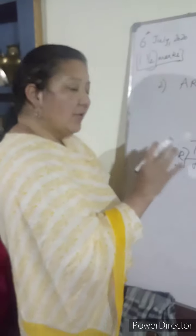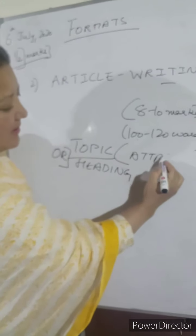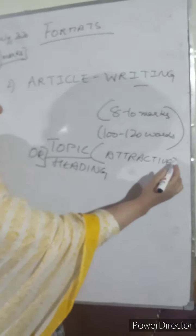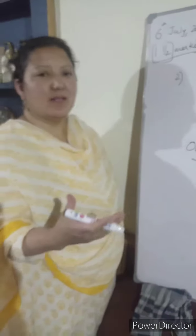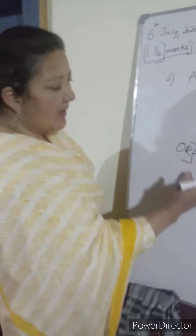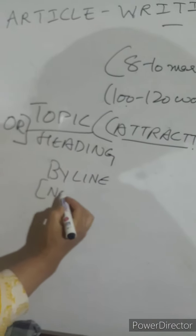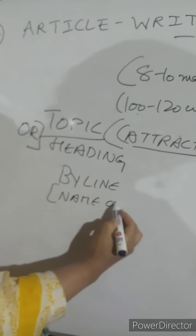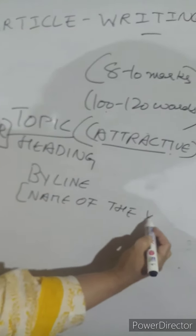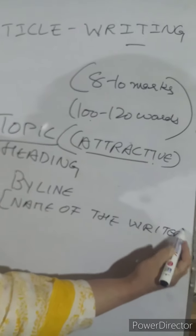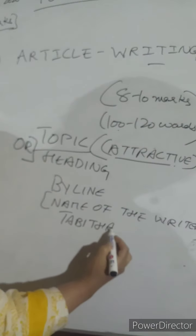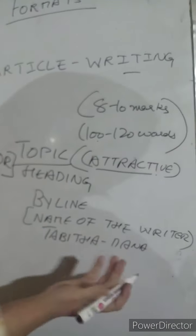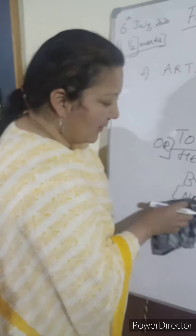After the topic or heading comes the byline. The byline is nothing but the name of the writer, which is you. So if I am writing an article, I will write 'Tabitha Dhanath,' which is my name. Write your complete, full name.